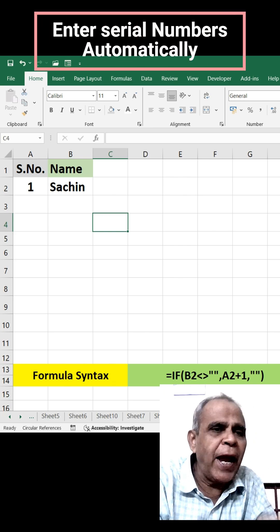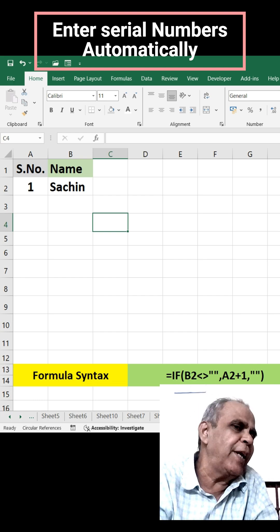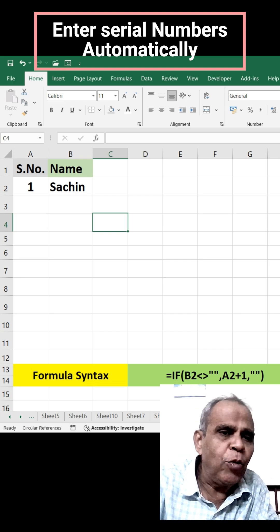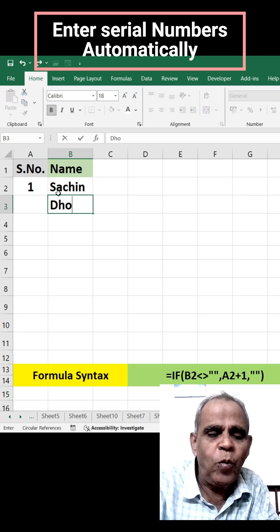In this spreadsheet, I have one record that is the name of the cricketer and serial number in A column. Now I enter a new name in B column. There is only Dhoni.